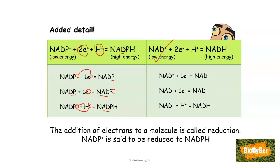From a chemical point of view, some of you might be interested in knowing that the addition of electrons to a molecule, that process, the addition of electrons, is called reduction. So therefore we can say that the NADP plus which you start out with, because it picks up electrons, is reduced to NADPH.